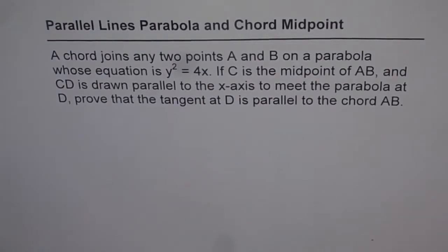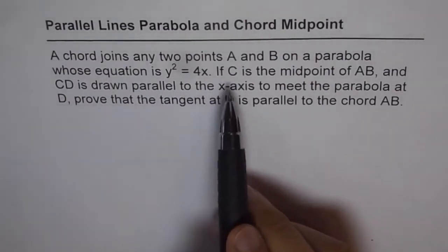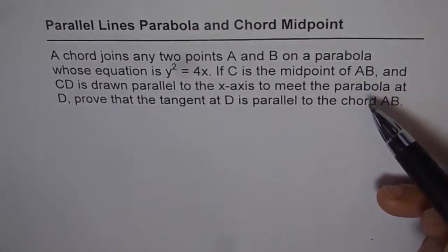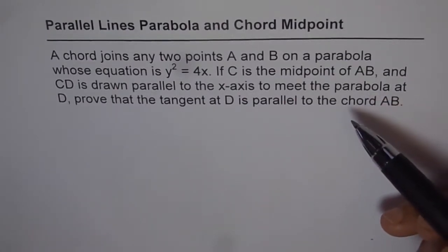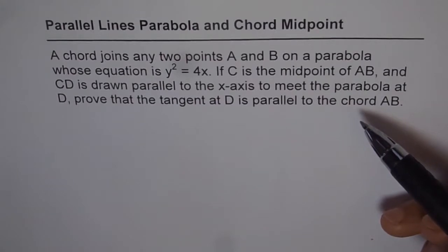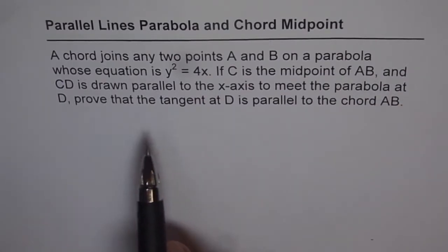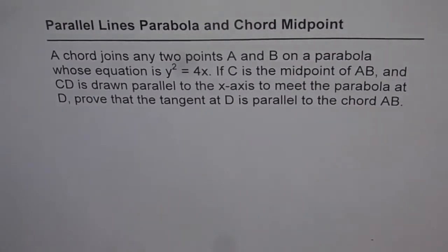Here is a very good thinking and communication problem from the book. It says: a chord joins any two points A and B on a parabola whose equation is y squared equals 4x. If C is the midpoint of AB and CD is drawn parallel to the x-axis to meet the parabola at D, prove that the tangent at D is parallel to the chord AB.